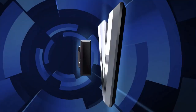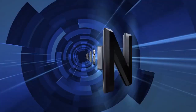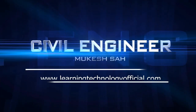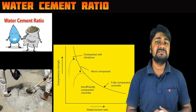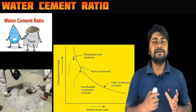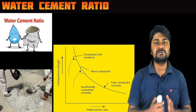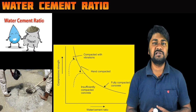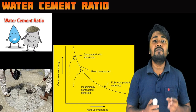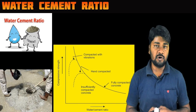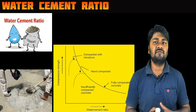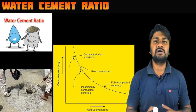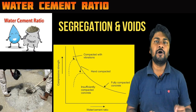Number one is water-cement ratio. The ratio of the weight of water to the weight of cement is called the water-cement ratio. It is the most important factor for gaining the strength of concrete. A lower water-cement ratio leads to higher strength of concrete. Generally, a water-cement ratio of 0.45 to 0.60 is used. Too much water leads to segregation and voids in concrete.